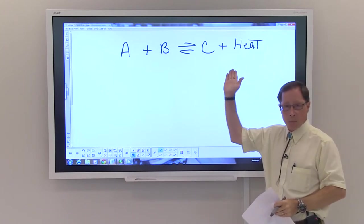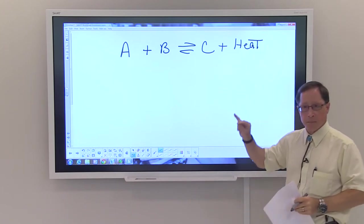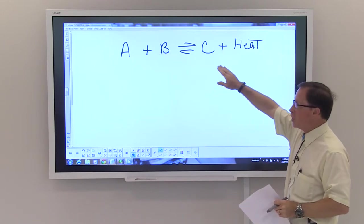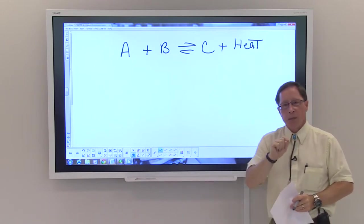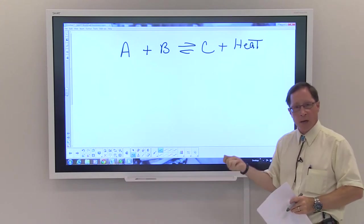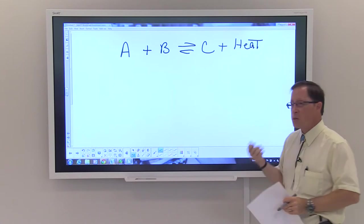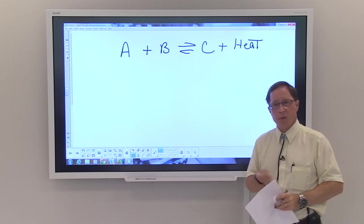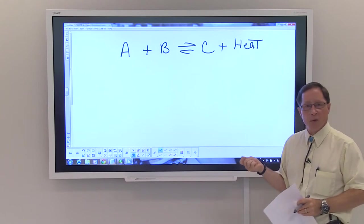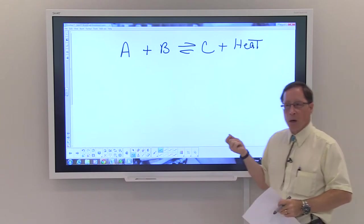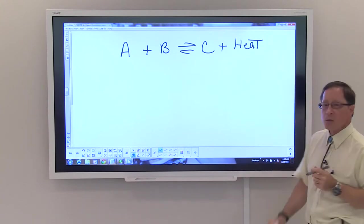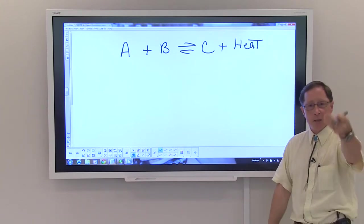In this example of an equilibrium, you see that we have A plus B in equilibrium with C and heat. And believe it or not, in this instance, heat is a product of the reaction. Now Le Chatelier's principle says that if a stress is applied, the system will move in the direction to relieve the stress. Let's talk a little bit about this. Heat is a product.